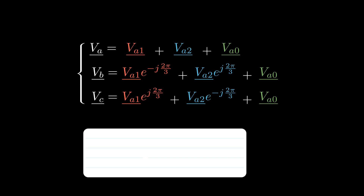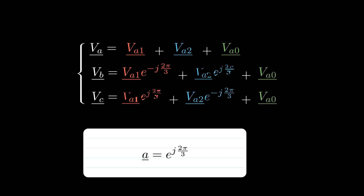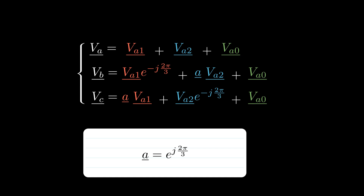To further simplify the formulation, we introduce an operator A, representing a rotation of 2π/3 in the complex plane, and substitute it into the equations.